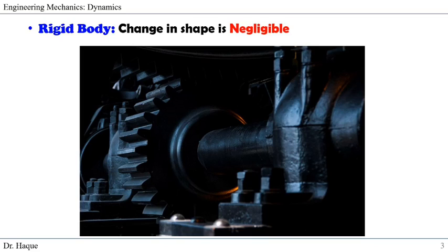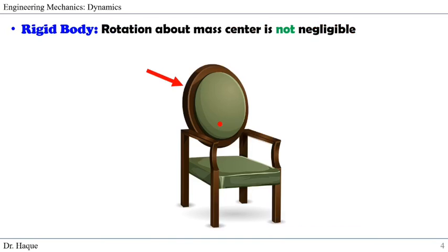Similarly, if we look at the mechanism here — the gear teeth, when it rotates, apply forces on each other, and thus also undergo deformation. But compared to the size of the gear, the shape change is very small, so we can neglect that, assuming the body as a rigid body.